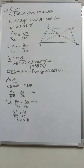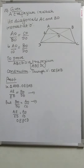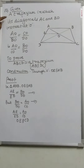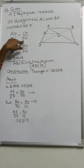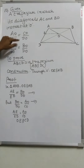Question number 10: The diagonals of a quadrilateral ABCD intersect each other at point O such that AO by BO is equal to CO by DO. Show that ABCD is a trapezium. Given: AO by BO is equal to CO by DO.